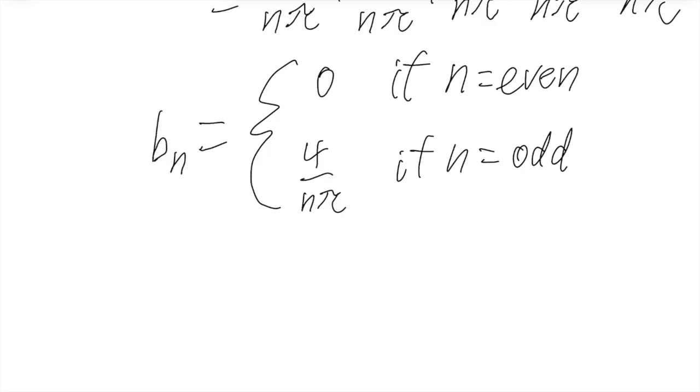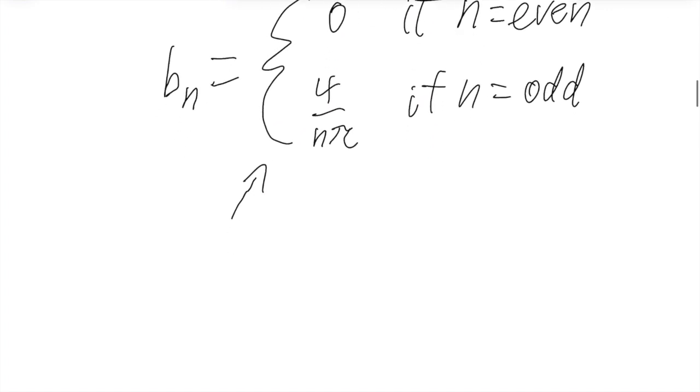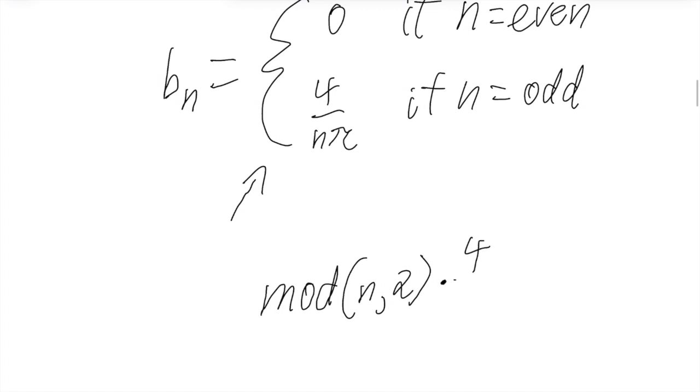So the most elegant way to express these two cases would be maybe to use the mod function. So mod n 2, and then we'll multiply that by 4 over nπ. So if n is odd, the result of this will be 1. And 4 over nπ will stand unchanged. But if n is even, then this will be 0. And so the whole thing will equal to 0.